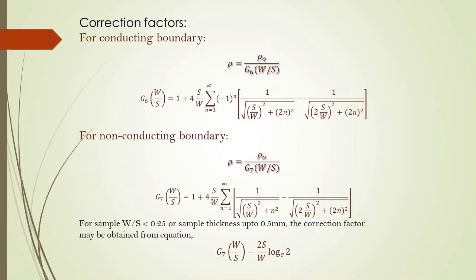After obtaining ρ₀ using the equation ρ₀ = V/I × 2πs, this is not yet the correct value — some corrections must be incorporated. This is because we assumed the material is semi-infinite, meaning the thickness should be large compared to probe spacing and the lateral dimensions should also be large compared to probe spacing. However, in practice we will use thin samples, so geometrical corrections must be applied.